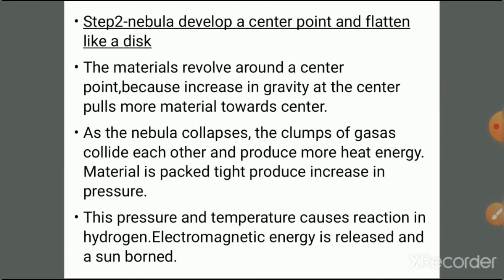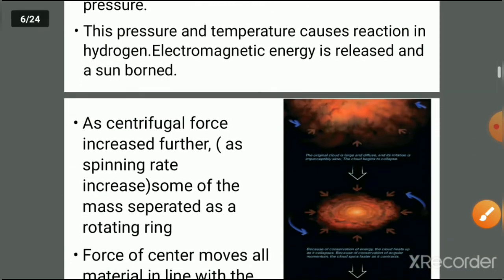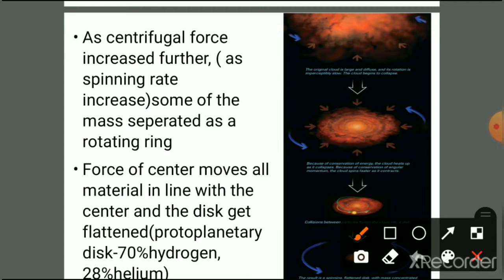In Step 2, two questions arise: how did the nebula develop a center point, and how did it get flattened into a disk? Materials revolve around a center point because the increase in gravity at the center pulls more material inward. As the nebula collapses, clumps of gases collide and produce more heat energy. Material is packed tightly, increasing pressure. This pressure and temperature cause nuclear reactions in the hydrogen, electromagnetic energy is released, and the Sun is born.